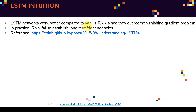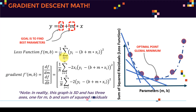LSTM networks work better compared to vanilla recurrent neural networks since they overcome the vanishing gradient problem. If you remember from previous lectures, recurrent neural networks in theory can work great, but unfortunately in practice they perform very poorly. The reason is because of the vanishing gradient problem — as we propagate the error back through all these multiple layers, the network performance will be very poor during training.